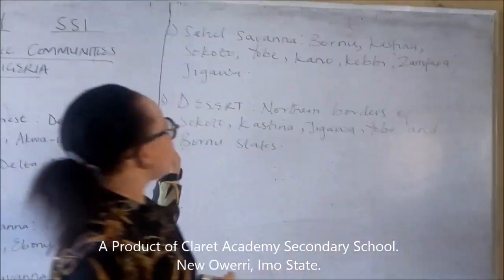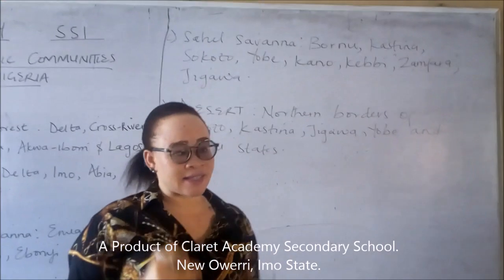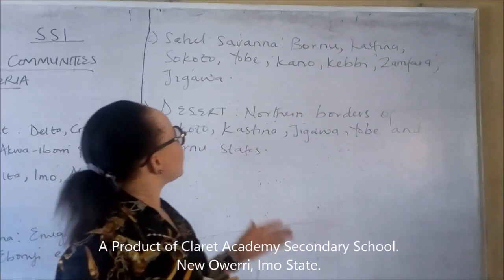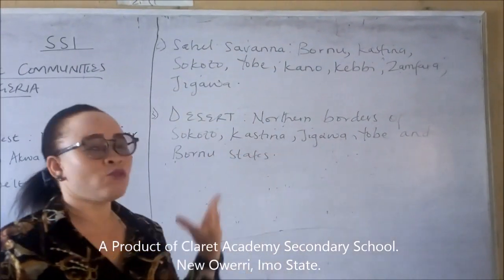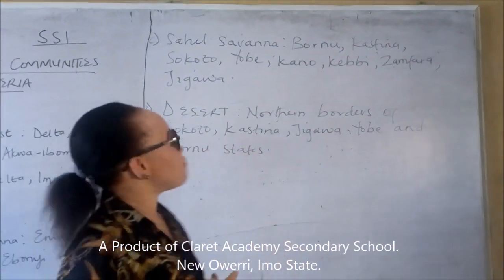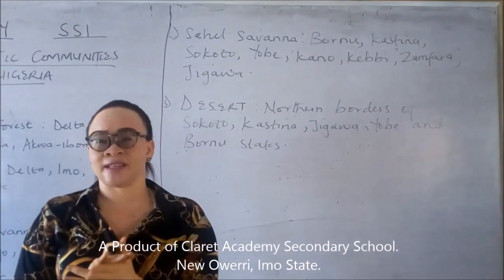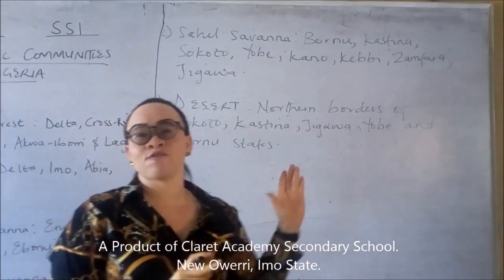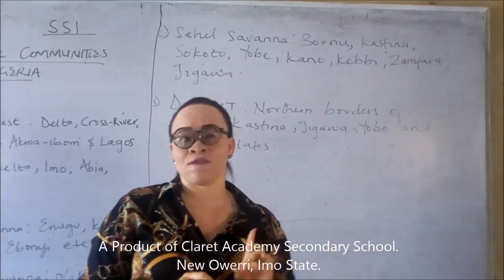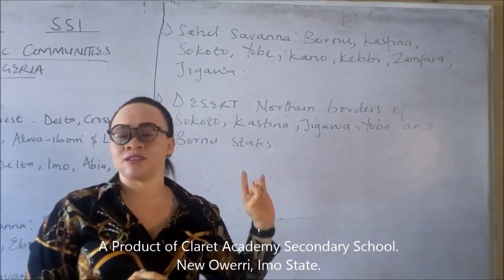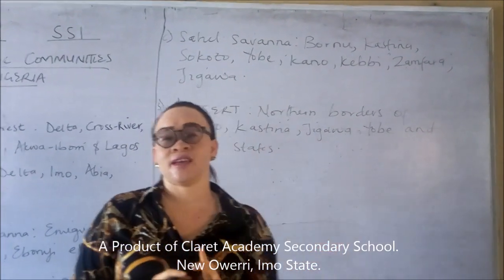You have the Sahel savannah, which is found in states like Borno, Katsina, Sokoto, Yobe, Kano, Kebbi, Zamfara, and Jigawa states. Now in these states, you have very, very low rainfall — rainfall is almost non-existent.